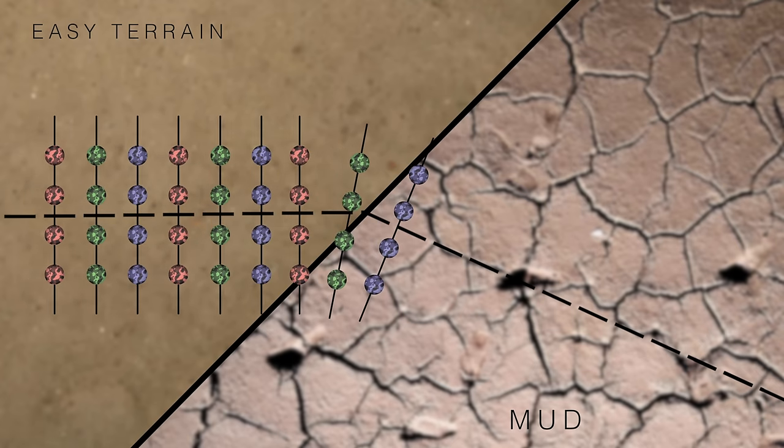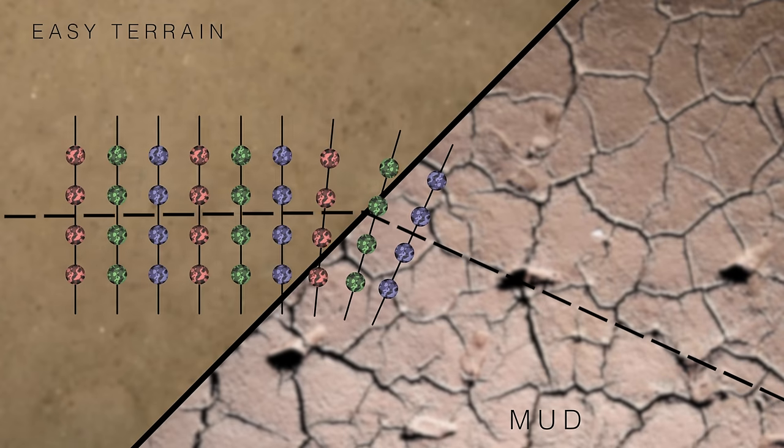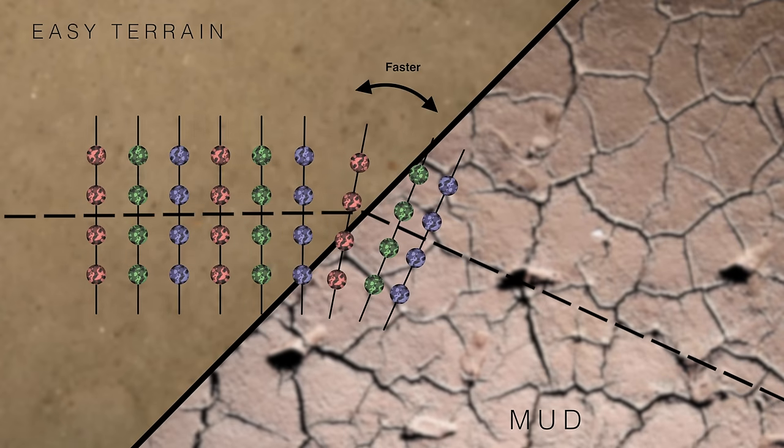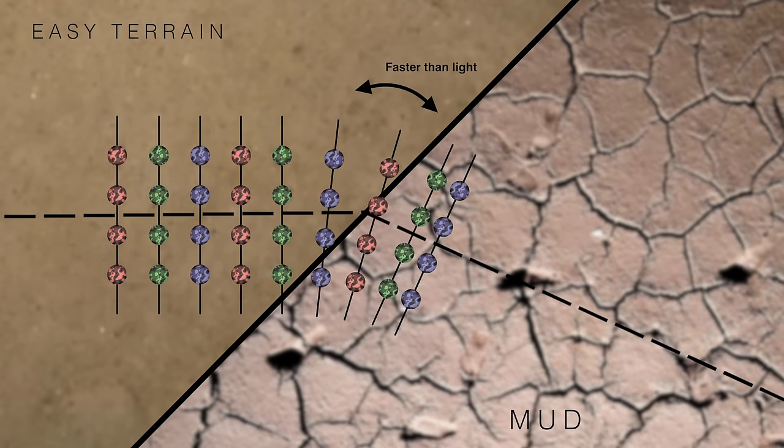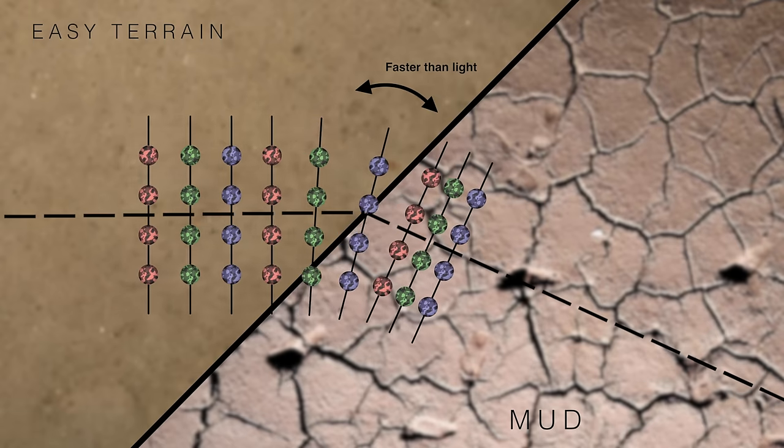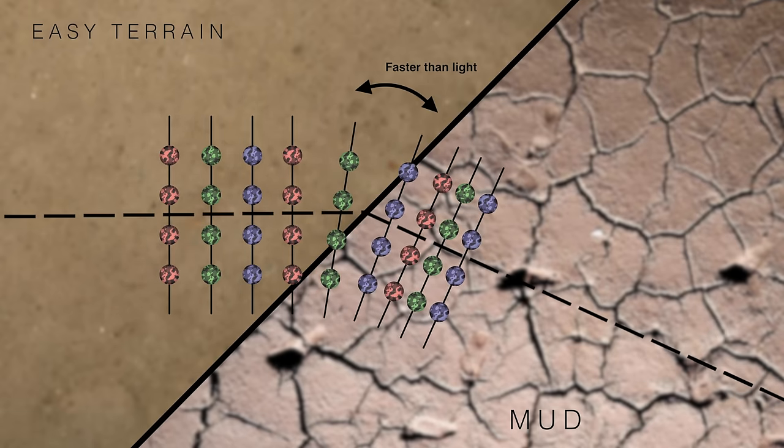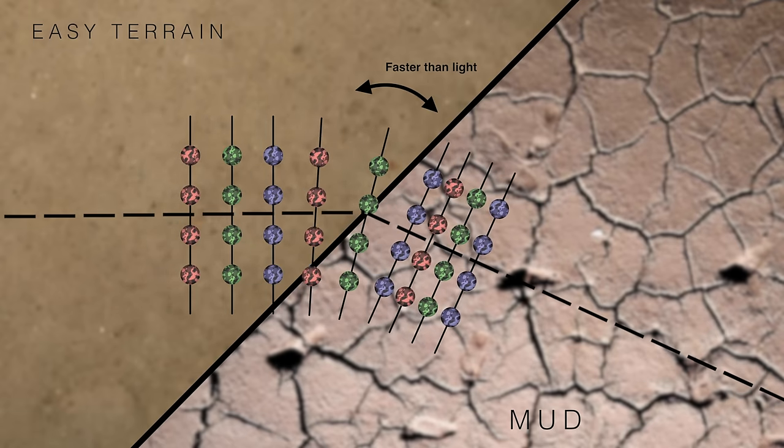The problem is that this torque means that the soldiers on the top of the screen move faster, which is to say that, if they were light, this part of the beam of light would have to move faster than light. So, this explanation doesn't work either.